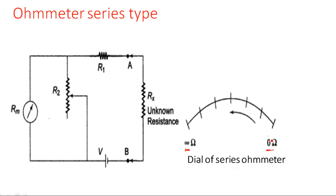That means the meter is calibrated from right to left. Generally any meter is calibrated from left to right — zero on the left and maximum or infinity on the right. But in the case of series type ohmmeter, it is calibrated in a special way: zero is on the right side and infinity is on the left side. For shunt type, the meter is calibrated from left to right, with zero on the left and infinity on the right.